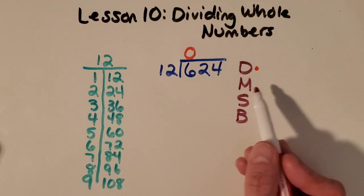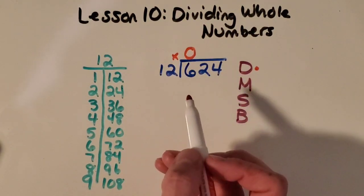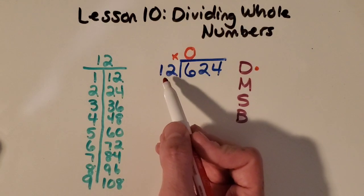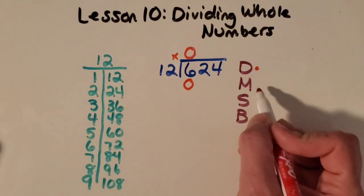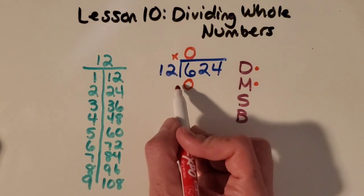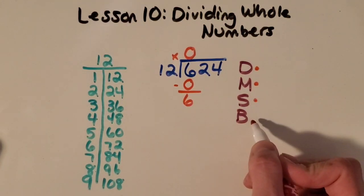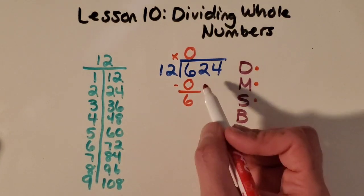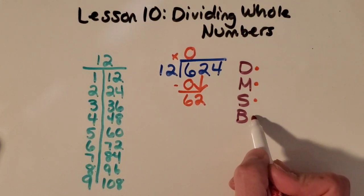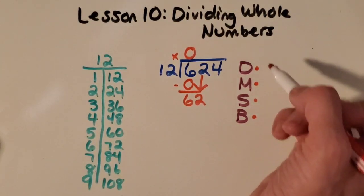I'm going to multiply next. I like to put a little X right here to remind myself of what I'm multiplying. I'm going to do the divisor times the digit I just wrote. So 12 times zero is zero. Good job. Then you guessed it, we're going to subtract and we get six there. And then we're going to bring down the very next digit, just the next one, so this two right here. So now I've completed all four steps. And when I do that, I start over again.